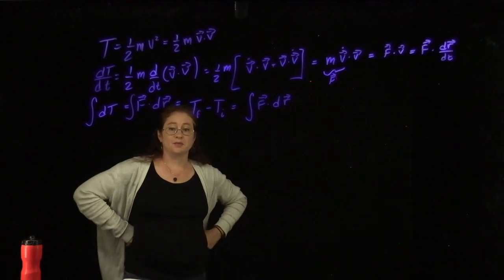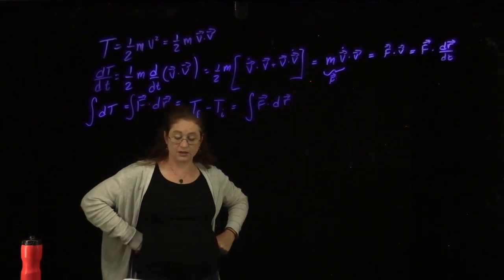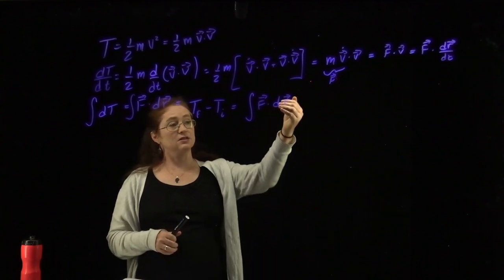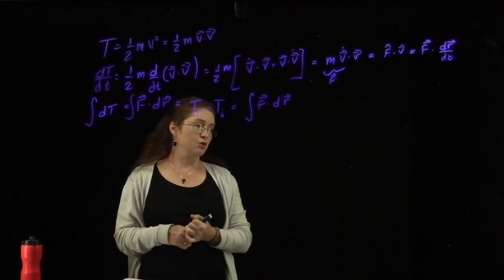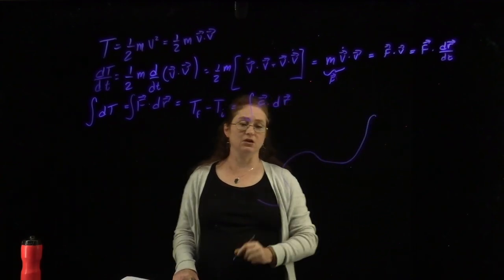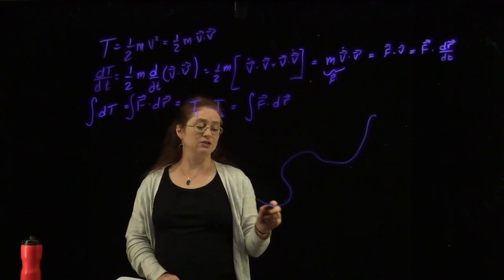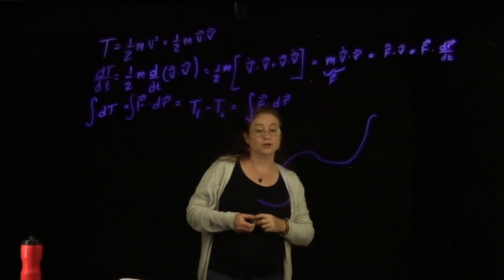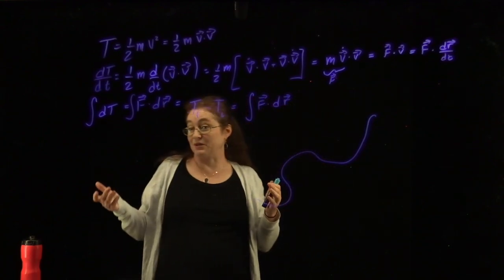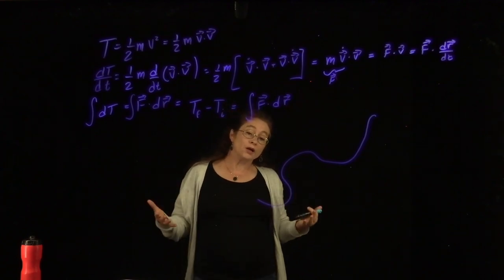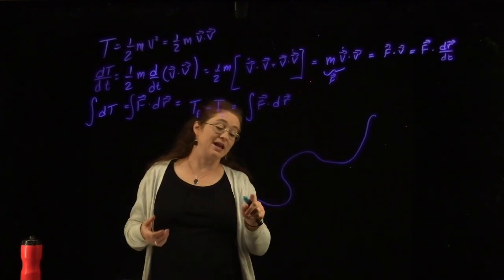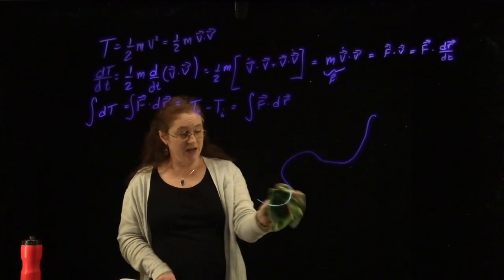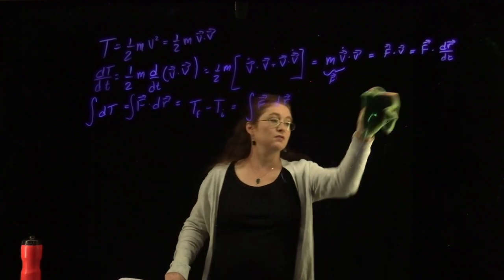You would have probably seen this already in your introductory class. This is something we call a line integral, where we have to consider the path that we are using to go between two points. If you follow a funky curve and want to calculate the work done, you have to integrate along this path. Either the path doesn't matter — for a conservative force — or we can parameterize the shape of the line to calculate this line integral. We're going to do a few examples of line integrals.